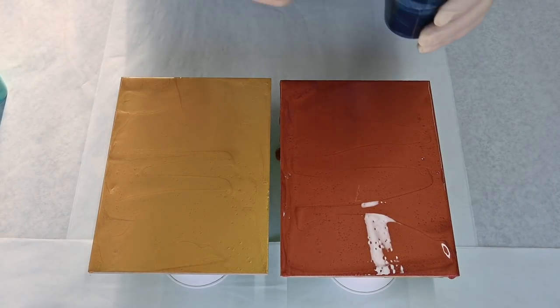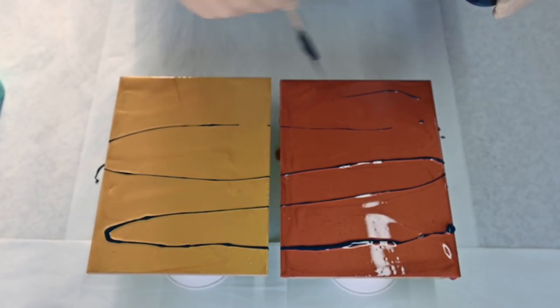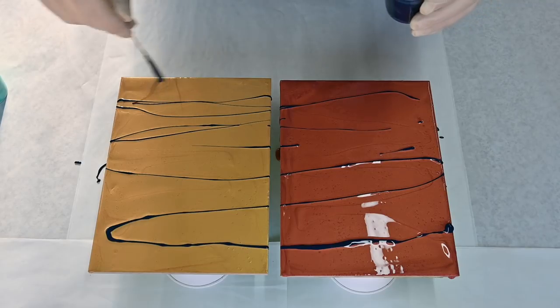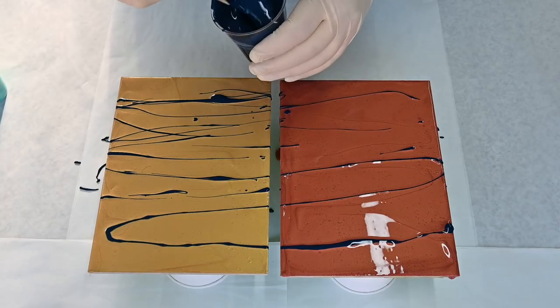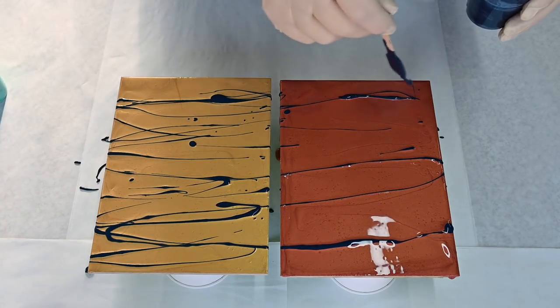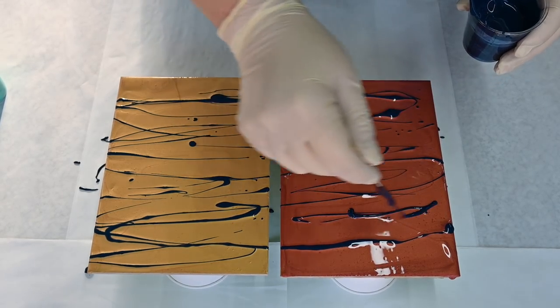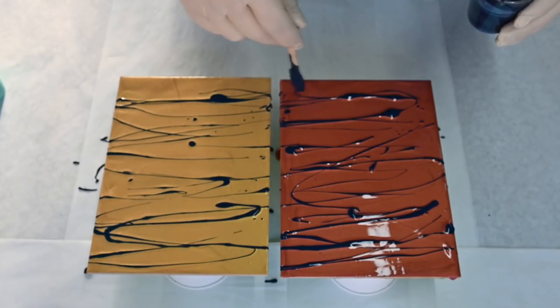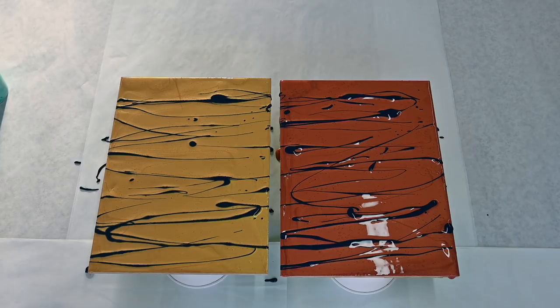I will start with this phthalo prussian blue from Amsterdam. I will just drizzle some paint. Maybe I should go just one and then the next one. I chose the colors that should go well with both of those background colors.